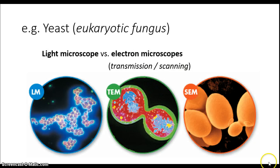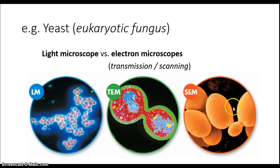There are two types of electron microscope. The transmission electron microscope transmits a beam of electrons through the image, creating a very flat 2D look. The scanning electron microscope scans the electrons over the surface, giving a 3D appearance — as seen with these yeast cells, which show relatively little detail under a light microscope but far greater detail using the electron microscope, either the flat image with the TEM or the 3D image with the SEM.